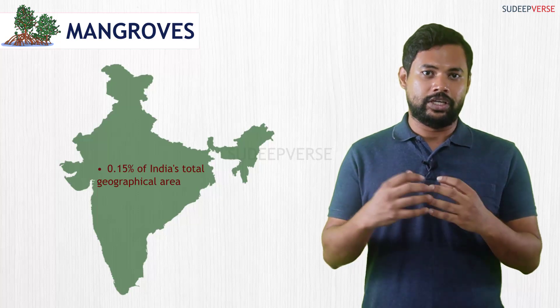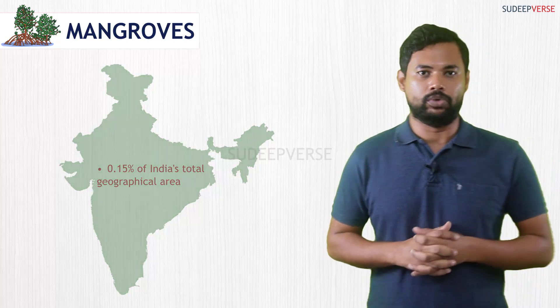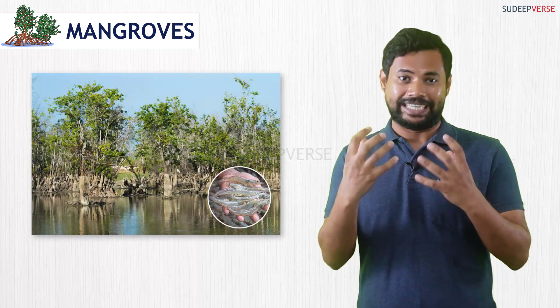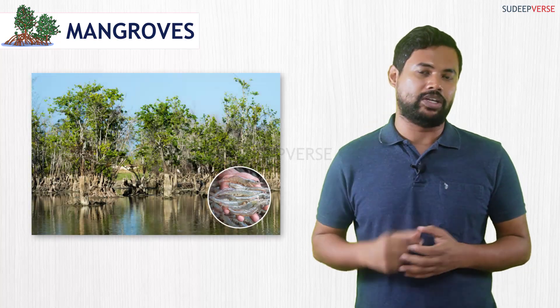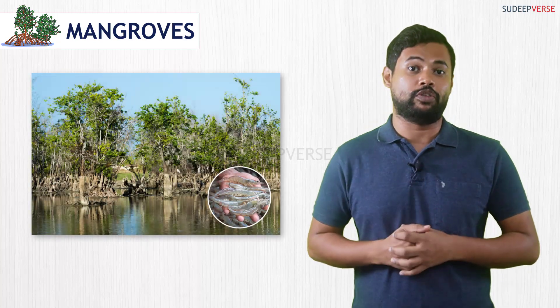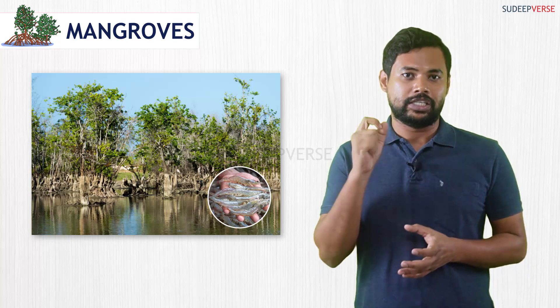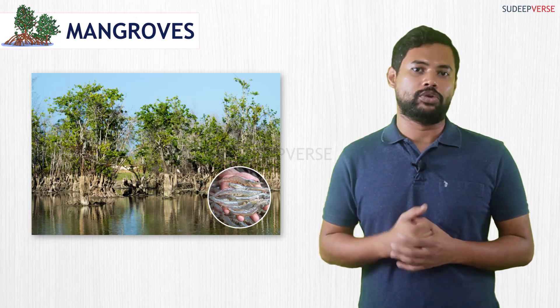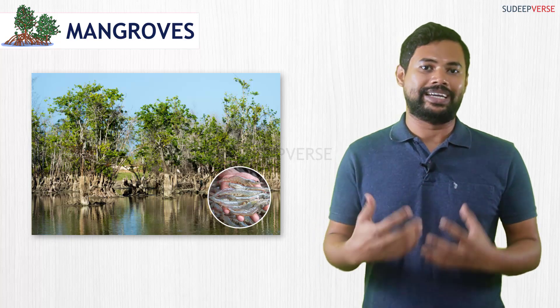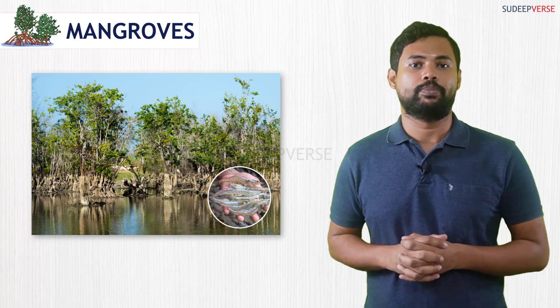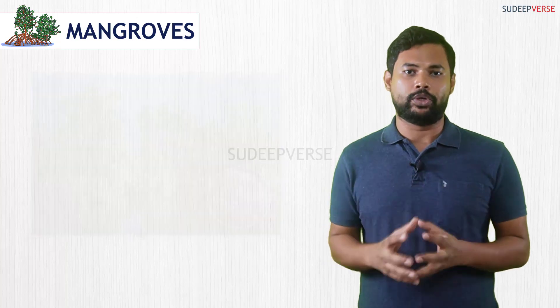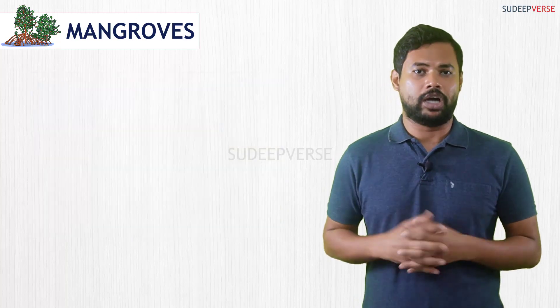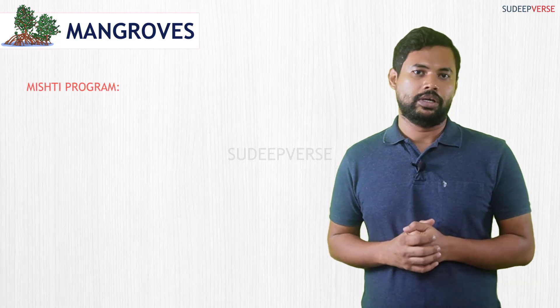However, there has been 35 percent degradation of mangroves. The main reason for this degradation in India is shrimp farming — shrimp culture is getting identified as one of the most important causes of mangrove degradation.